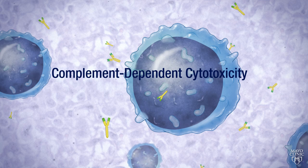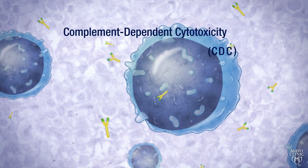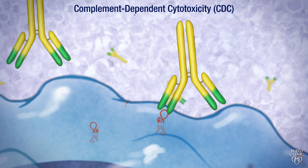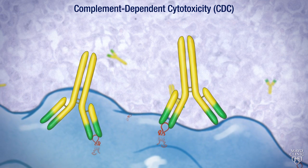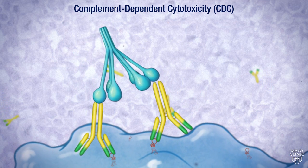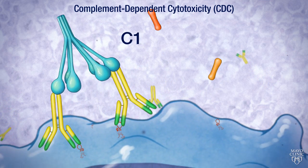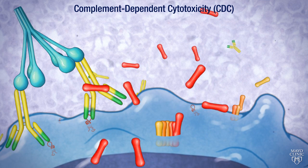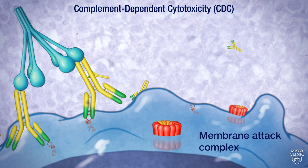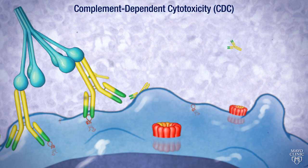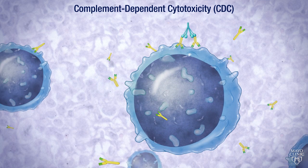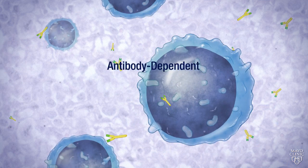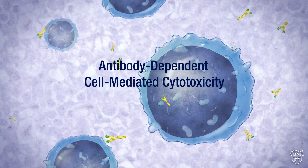In complement-dependent cytotoxicity, or CDC, the antibody and antigen complex of Rituxan to CD20 leads to the activation of a complement system. Part of the innate immune system, the complement system represents a large group of proteins that work together to destroy invading pathogens or cells infected with pathogens in the body, by punching holes in their cell membranes, destroying the integrity of the cell membrane, and killing the cell.